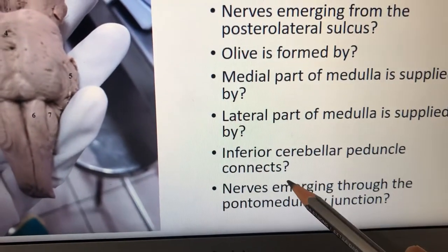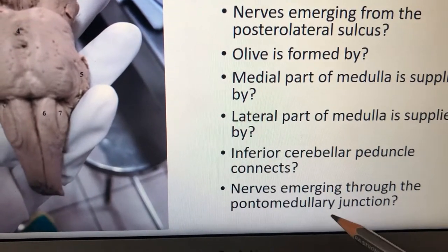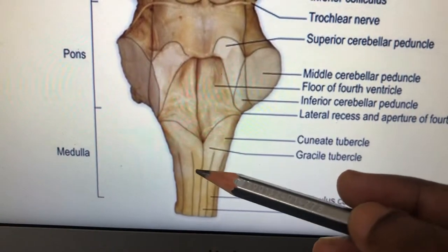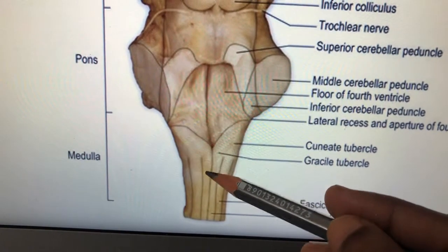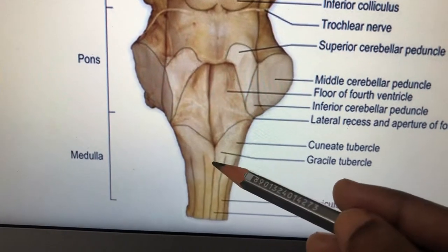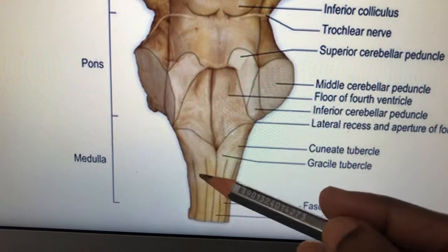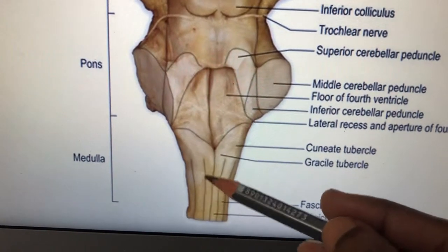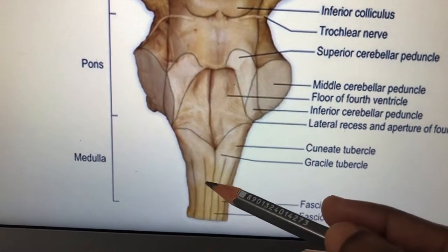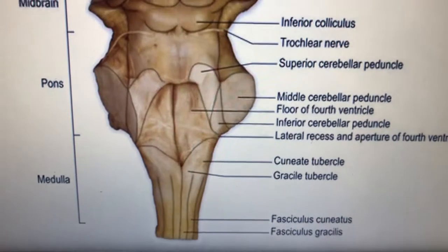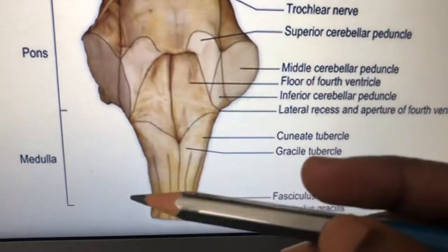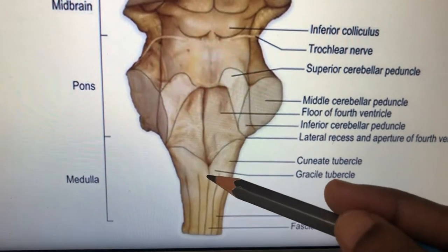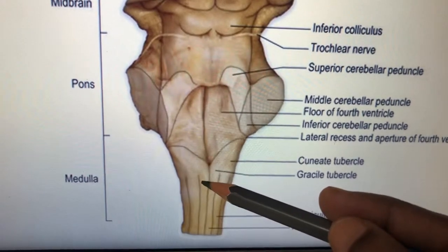The inferior cerebellar peduncle connects the medulla to the cerebellum. On the posterior aspect of the medulla oblongata, there are some tubercles: the medial one is called the gracile tubercle and the lateral one is called the cuneate tubercle. The underlying fasciculus gracilis and fasciculus cuneatus have nucleus gracilis and nucleus cuneatus beneath them. These carry the posterior column — conscious proprioception including position sense, joint sense, vibration, two-point discrimination, and stereognosis.